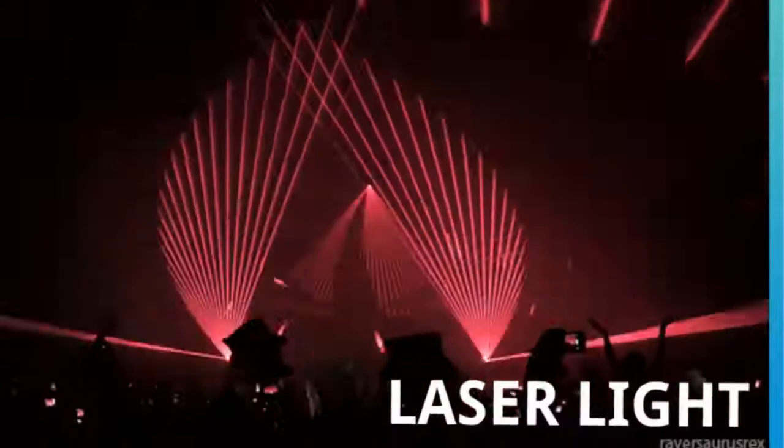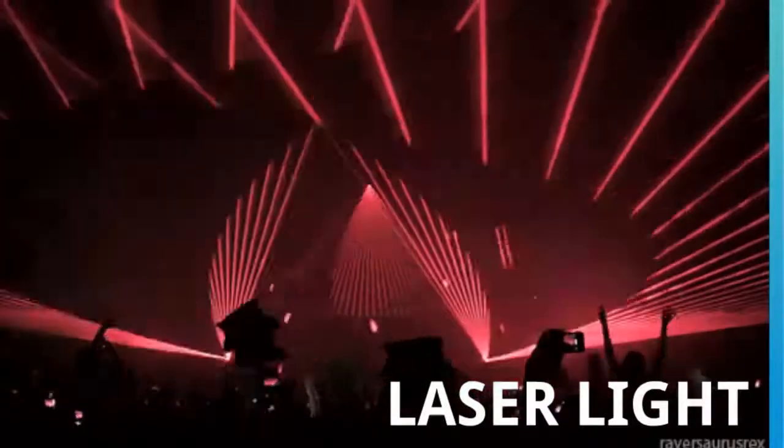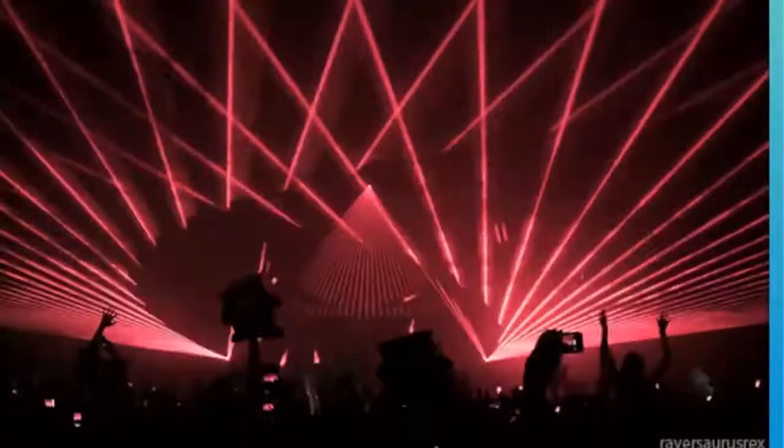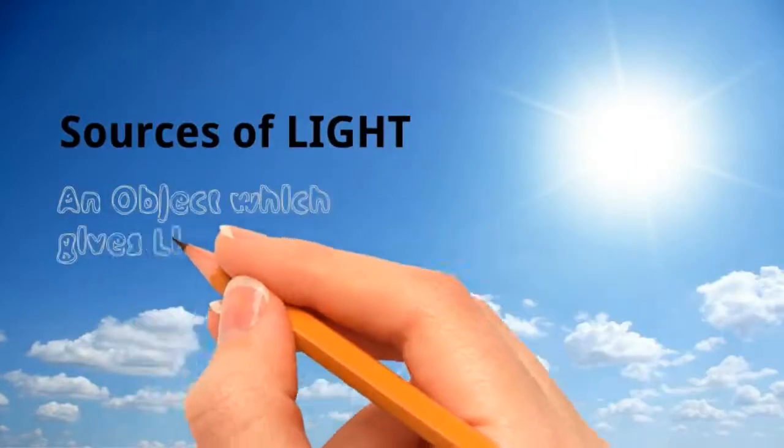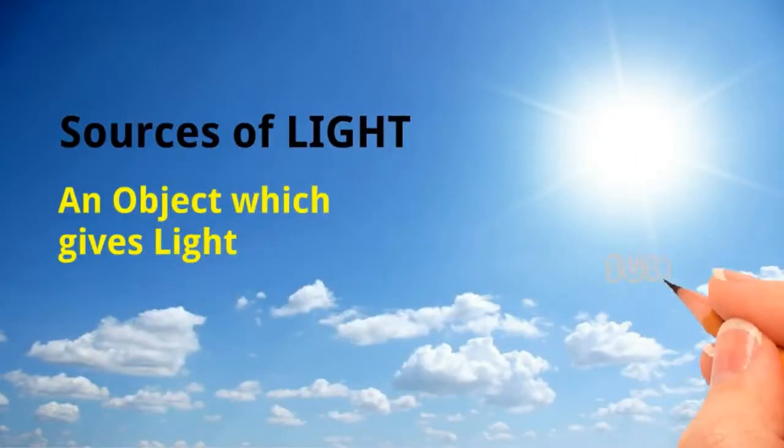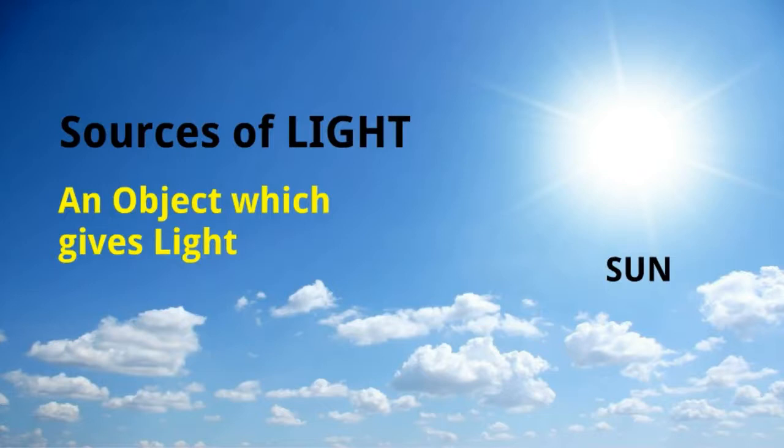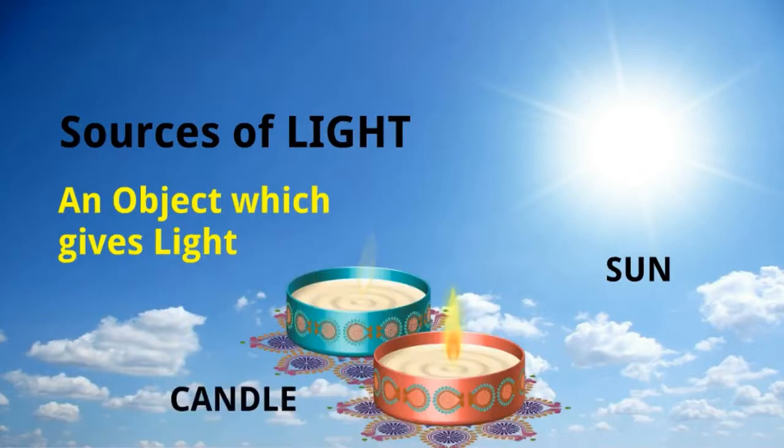Sources of light: an object which gives light is the source of light. Like the sun, it gives light, so it's a source of light. A candle, if we burn the candle, it will be the source of light.